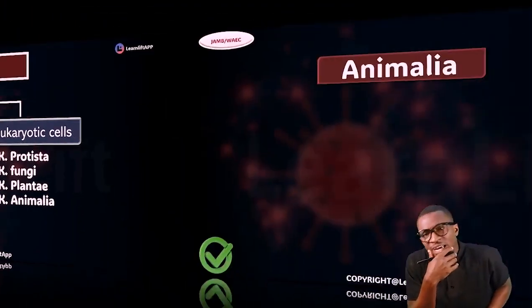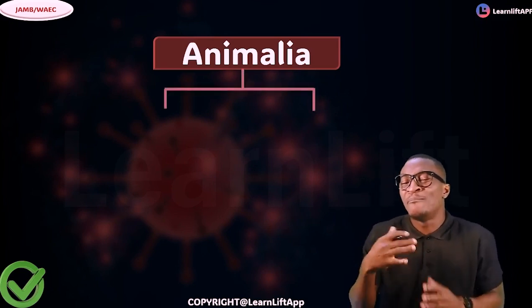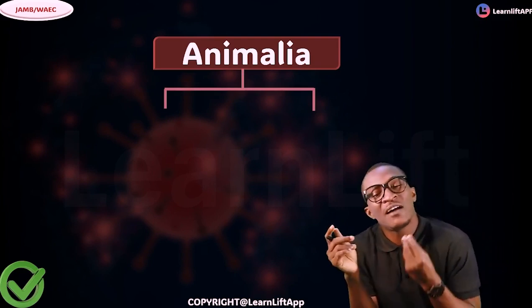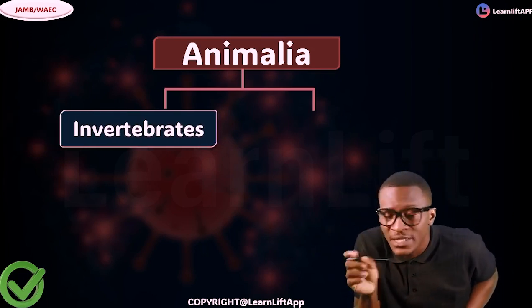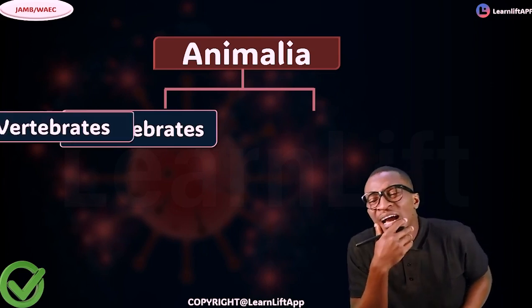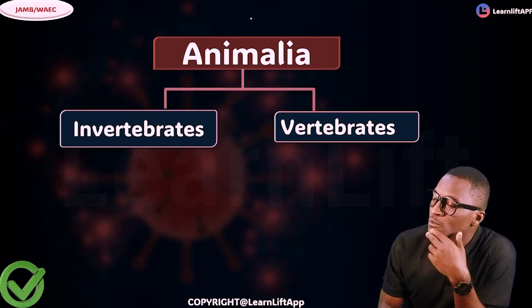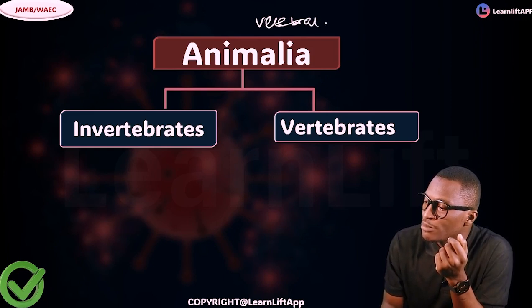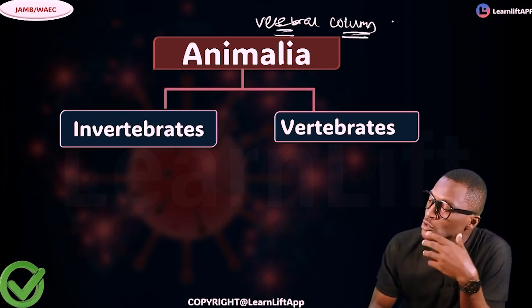Kingdom Animalia is divided into two, based on whether you have a backbone or you lack a backbone. On the basis of classification, either you have a notochord or you lack a notochord. Those that lack the notochord are called invertebrates, while those that have it are called vertebrates. So animals are classified based on the vertebral column, also called the notochord.